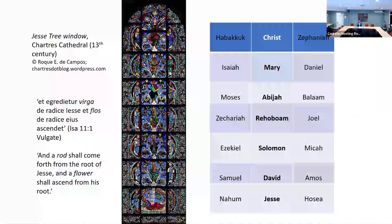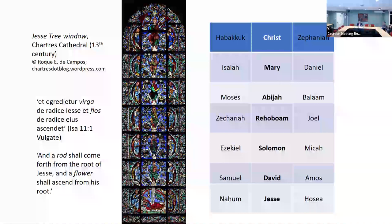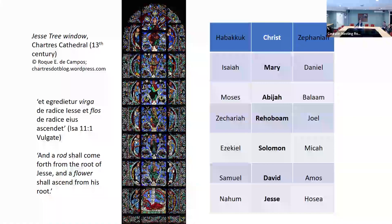The Jesse tree, because it climaxes not just with the child but with his mother, is a reminder that the genealogy in Matthew actually ends with the mention not of a father, but of a mother: 'Joseph, the husband of Mary, of whom Jesus was born, who is called the Messiah.' Mary is actually one of five mothers mentioned in a genealogy which is otherwise patrilineal — which is normal for Jewish genealogies, certainly biblical genealogies, which are usually concerned with ancestry through the father.